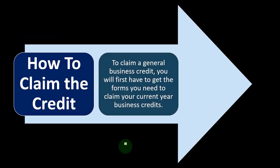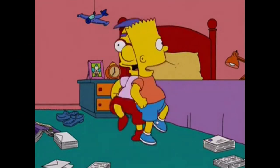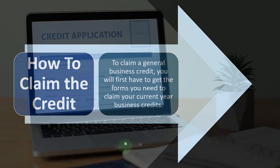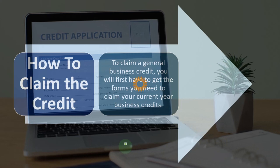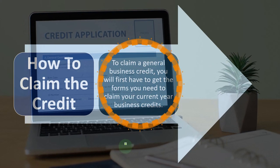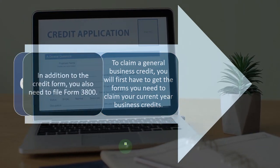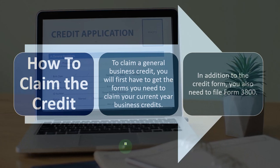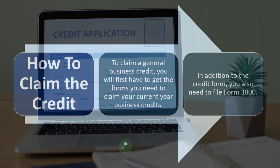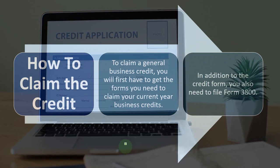To claim a general business credit, you will first have to get the forms you need to claim your current year business credit — research that on the IRS website at irs.gov. In addition to the individual credit form, you also need to file Form 3800.